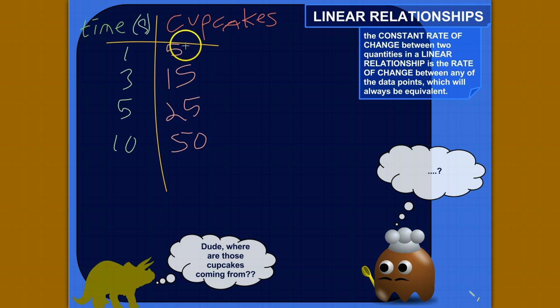I want to find out what the constant rate of change is in this function, and by doing that I'll show you what the constant rate of change means. Actually, all linear relationships have a constant rate of change, and that's what makes them linear.